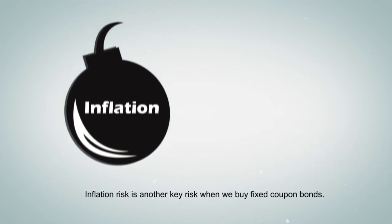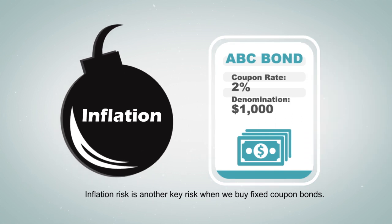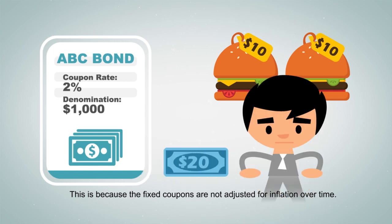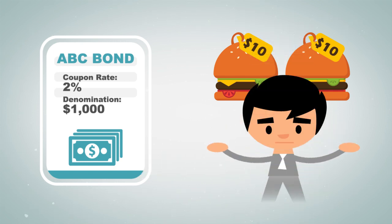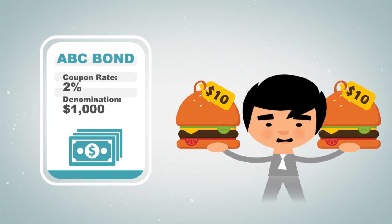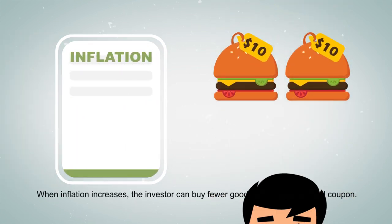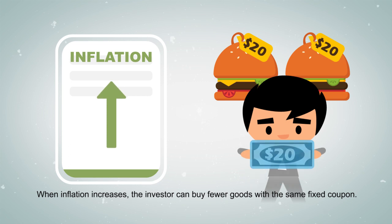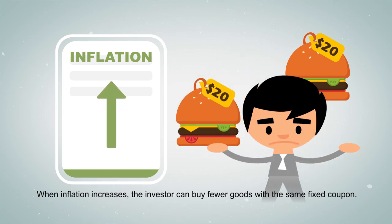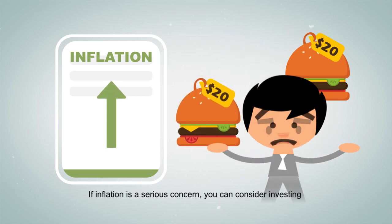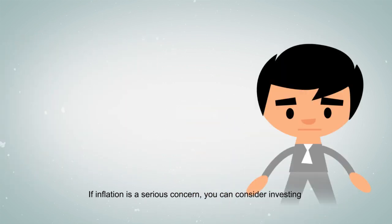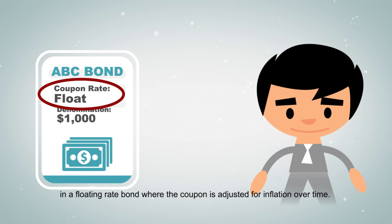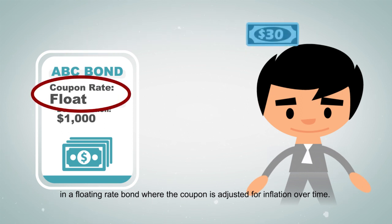Inflation risk is another key risk when we buy fixed-coupon bonds. This is because the fixed coupons are not adjusted for inflation over time. When inflation increases, the investor can buy fewer goods with the same fixed coupon. If inflation is a serious concern, you can consider investing in a floating rate bond, where the coupon is adjusted for inflation over time.